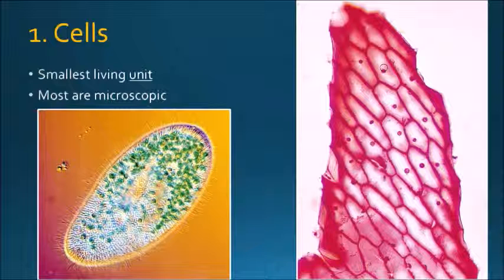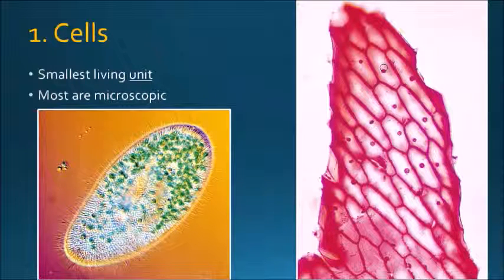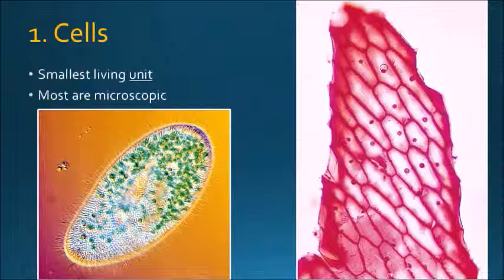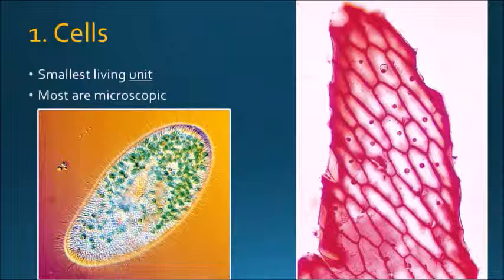And when you go to a large scale, for example onion cells — that's what you see: a bunch of cells together forming something we call epidermis, which is basically a skin. That's the skin of the onion cell in there.